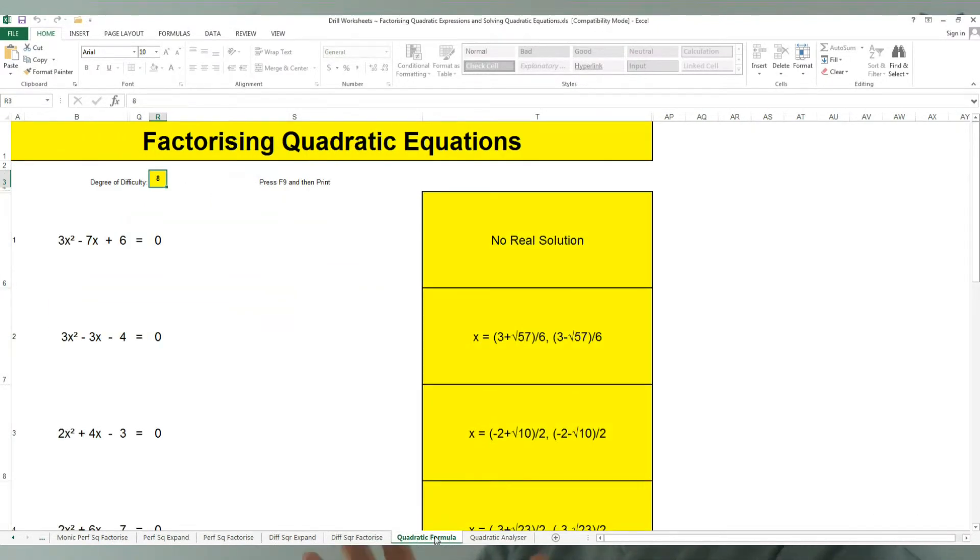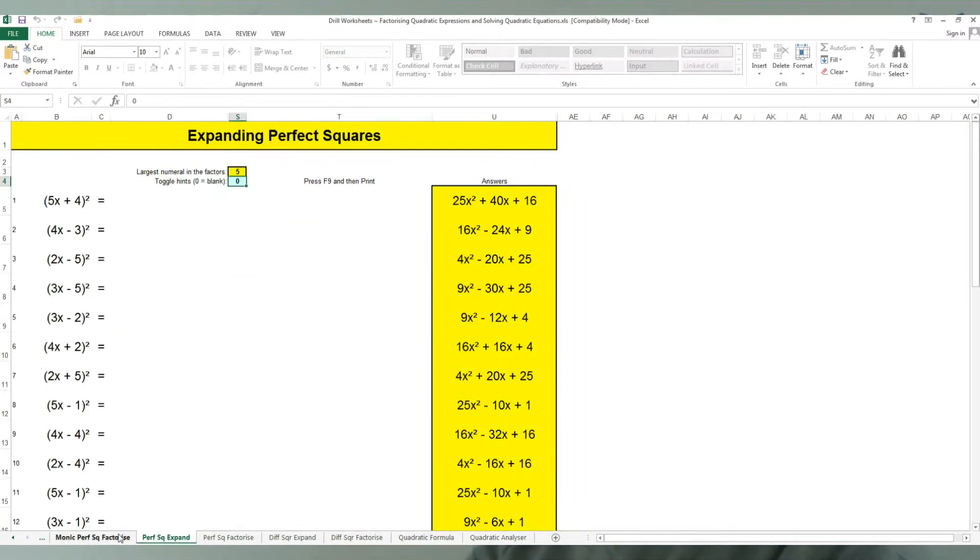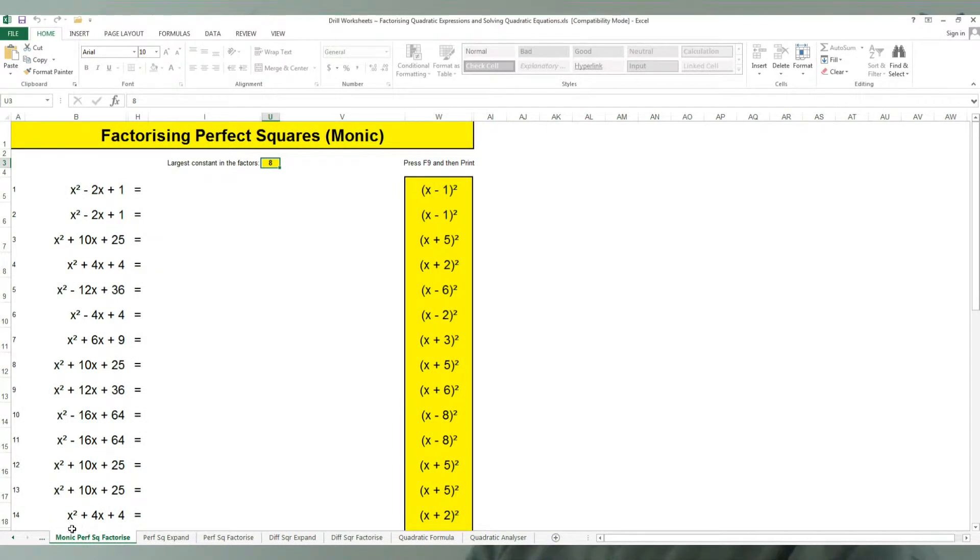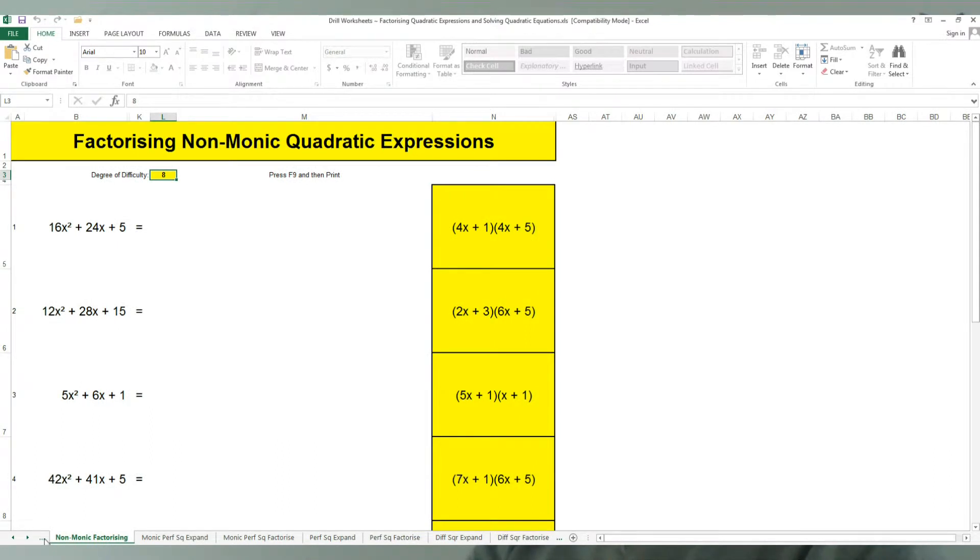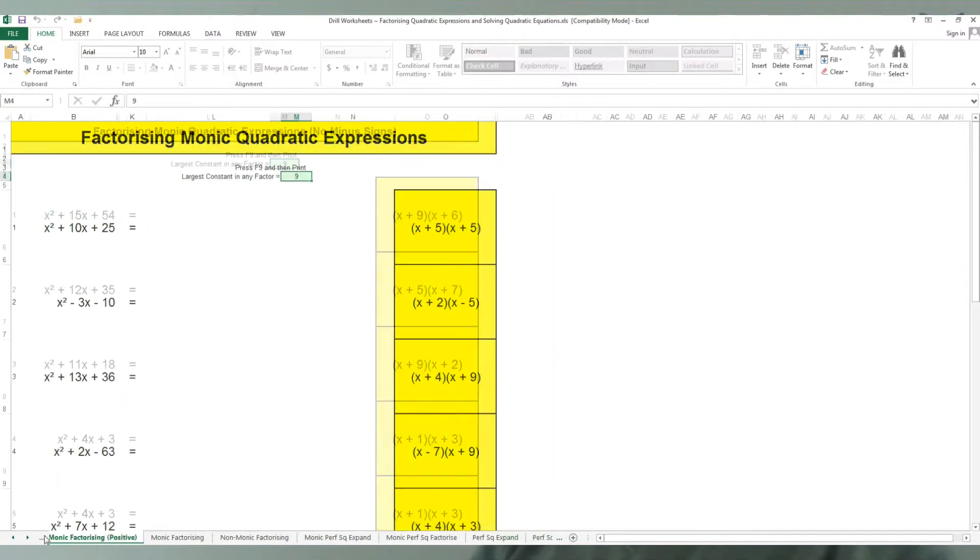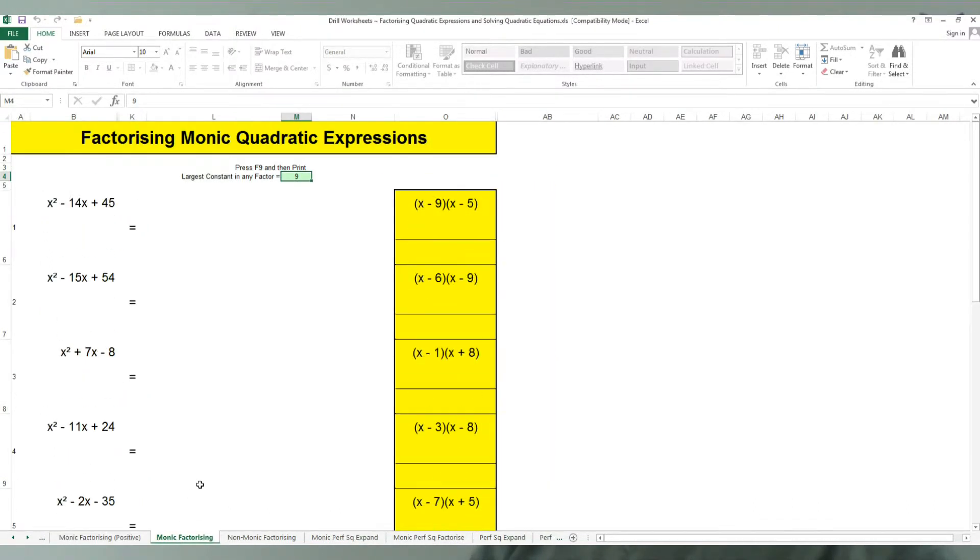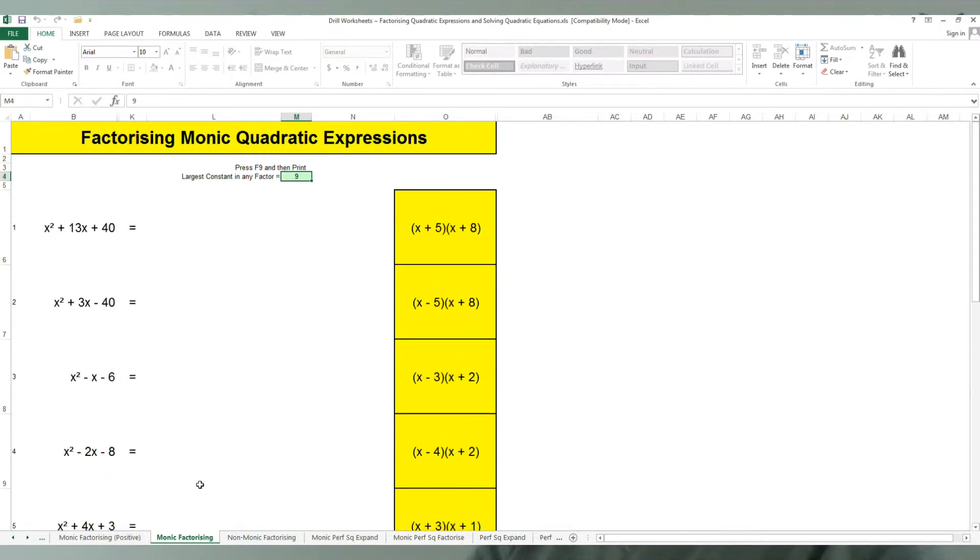And in each case, when you look at a particular sheet, if you press the F9 key, it will use the randomizing process that Excel has to create random combinations of quadratics for you to practice. So you don't have to go looking up a textbook somewhere to find lots of examples. This workbook will produce everything you need to learn to factorize quadratic equations.